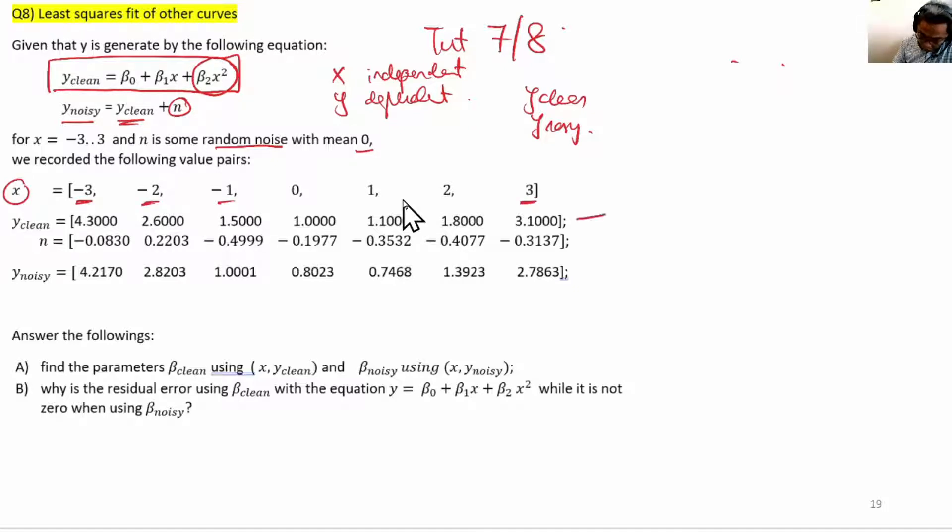To produce y_clean, we used y_clean equals β₀ plus β₁ times x plus β₂ times x squared. For this question, we set β₀ to be 1, β₁ to be minus 0.2, and β₂ to be plus 0.3. The x values are from minus three to plus three, and we substitute into this equation to get seven values of y_clean.